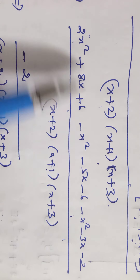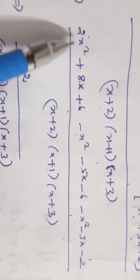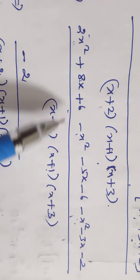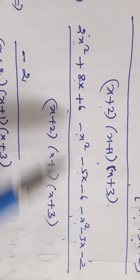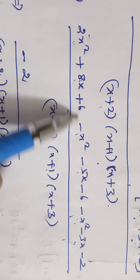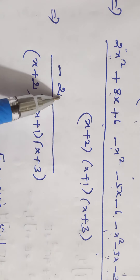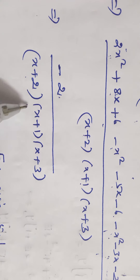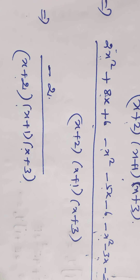Simplifying: 2x² minus x² minus x² equals 0; 8x minus 5x minus 3x equals 0; 6 minus 6 minus 2 equals minus 2. All terms cancel except minus 2, so the final answer is minus 2 divided by (x+1)(x+2)(x+3).